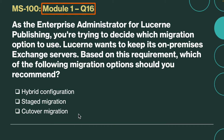Question number 16. As the enterprise administrator for Lucerne Publishing, you are trying to decide which migration option to use. Lucerne wants to keep its on-premises exchange servers. Based on this requirement, which of the following migration options should you recommend? Is it hybrid, staged, or cutover? The correct answer is hybrid configuration. When an organization wants to keep its on-premises exchange servers, the recommended approach is to use hybrid configuration.